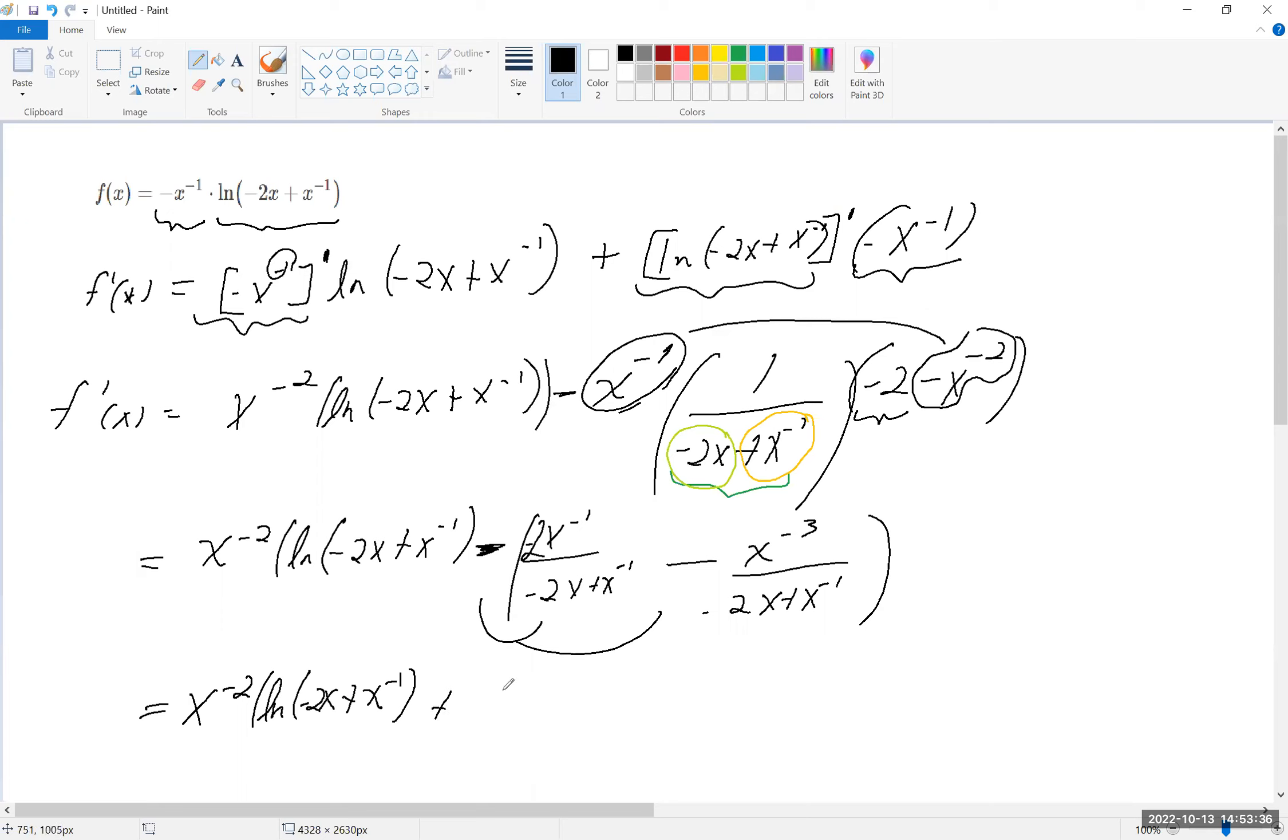It's plus now 2x to the minus 1 over negative 2x plus x to the minus 1. And then plus x to the minus 3 over negative 2x plus x to the minus 1. So that's what I'm getting at this point.